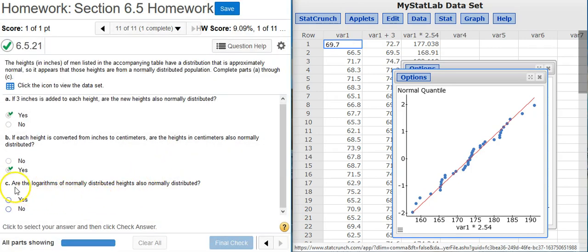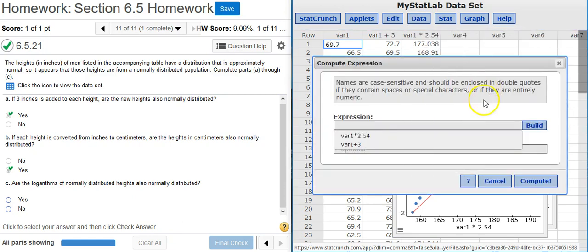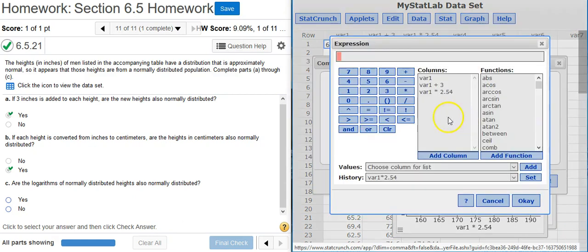Now part C asks, are the logarithms of normally distributed heights also normally distributed? OK, let's check that out. So back here in StatCrunch, I go to Data, Compute, Expression. I'm going to go to my build window. I'm going to select the first column. But wait, before I select the first column, I need to actually put this inside a logarithmic function. So I need to select the function first.